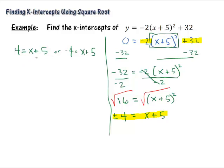So let's go ahead. We'll subtract 5, subtract 5, and get x = -1. And we'll subtract 5, subtract 5, and get x = -9. So there's our two solutions. And we can get two solutions because it's quadratic. So that's how we would write the solutions there.